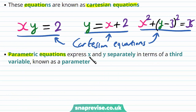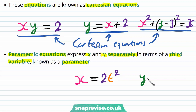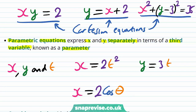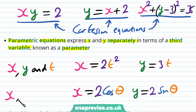However, parametric equations express x and y separately in terms of a third variable known as a parameter. For example, consider the parametric equations x is equal to 2t squared and y is equal to 3t — here t is the parameter. Alternatively, consider x is equal to 2 cosine theta and y is equal to 2 sine theta. These are also parametric equations because x and y are separately expressed in terms of the parameter theta.